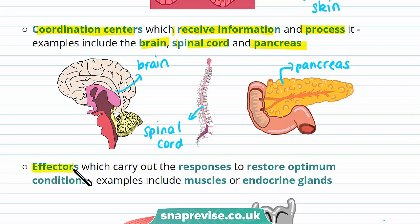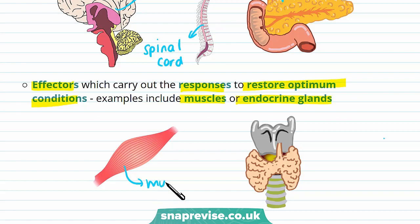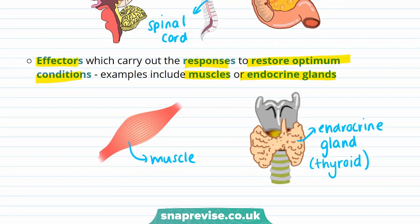Automatic control systems also have effectors. These carry out the responses to restore optimum conditions, and some examples include muscles or endocrine glands. For example, a response from a muscle might be to contract, allowing movement. A response from an endocrine gland, such as the thyroid, may be to reduce hormones to keep the metabolic rate constant.